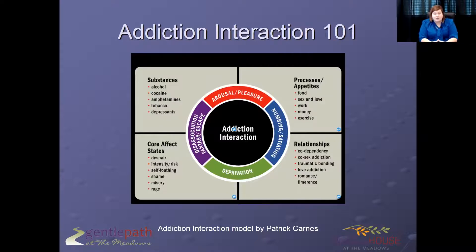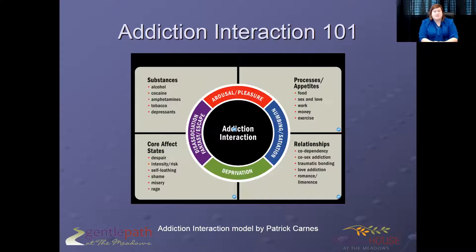Looking at those four gray quadrants: the top left is substances — there's really no surprise there. In the top right we have processes — things like food, sex and love, work, money, exercise. Really, if you can do it, you can make it into an addiction. These are common ones we'll see in young folks; maybe work a little less so, though you can see it in highly perfectionistic college students. Then core affect states — yes, we can be addicted to our emotions, particularly intense ones like self-loathing, rage, and shame.